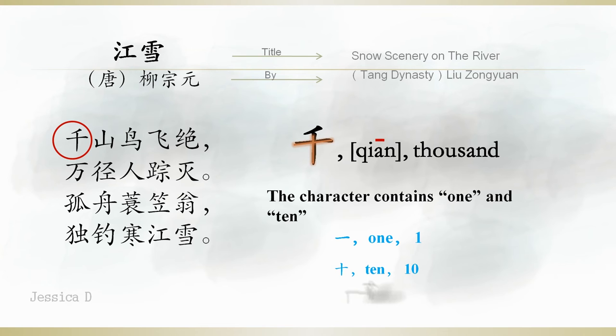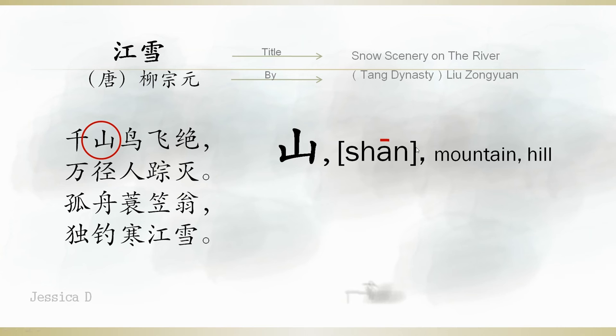The second character, 山, mountain, hill. 山 is a pictographic character.